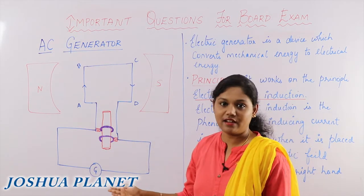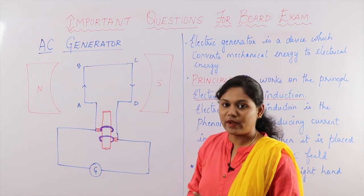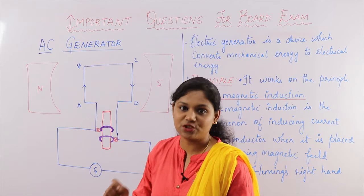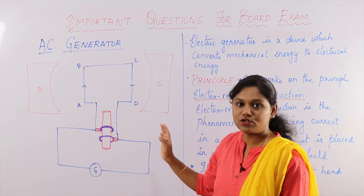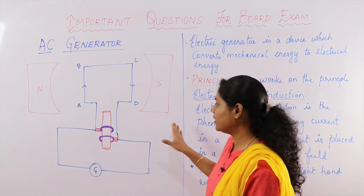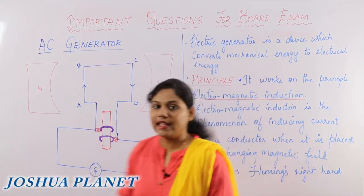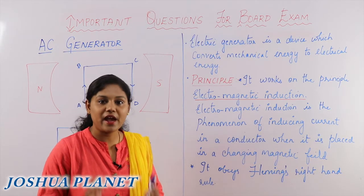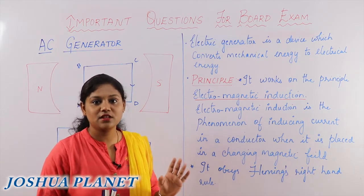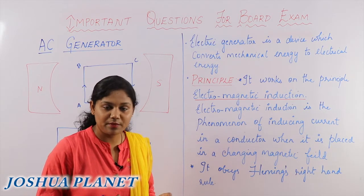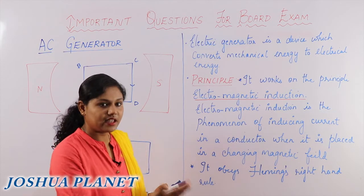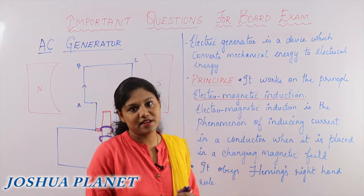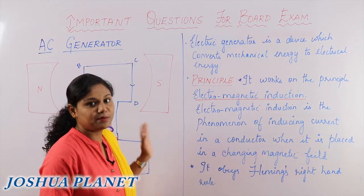First I'm taking AC generator, which can be asked for three or four marks in your board exam. When such a question is asked, I'll tell you the way you need to answer so that you will be impressing the person who corrects your paper. The first thing you need to do is draw a good diagram, a basic diagram that is scientifically correct. Then you have to attempt the question point-wise, which is very very important.